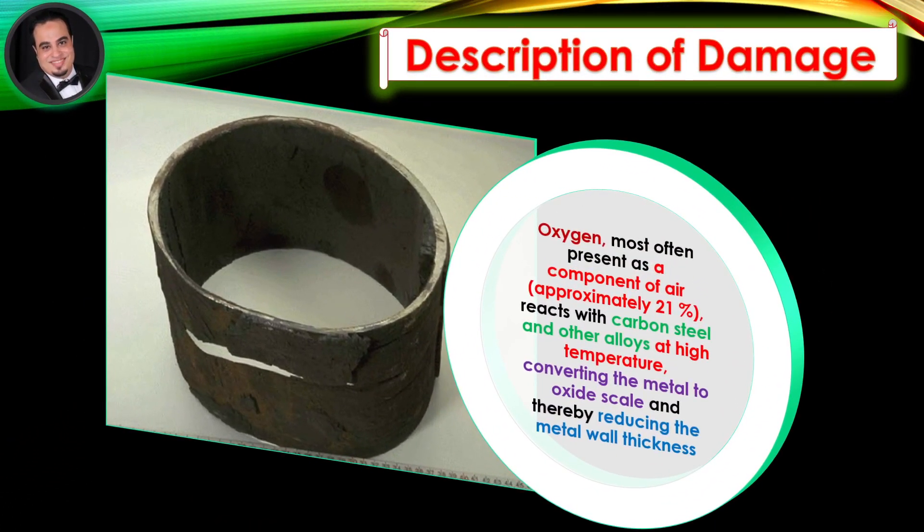Description of damage. Oxygen, most often present as a component of air at approximately 21%, reacts with carbon steel and other alloys at high temperature, converting the metal to oxide scale and thereby reducing the metal wall thickness.